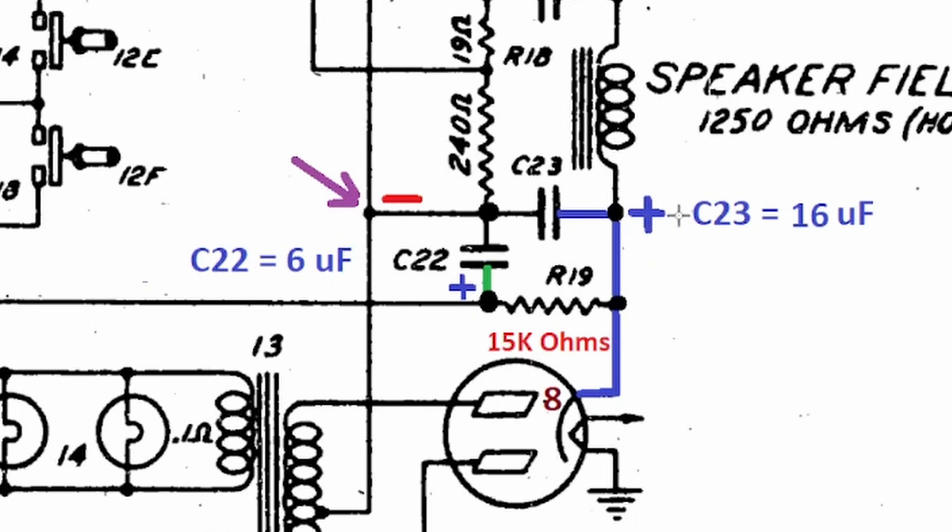The other side is going to be positive. There is a connection to R19 which is a resistor, and also is soldered to pin 8. So this is going to be 16 microfarad, the red wire that we discussed earlier. Of course, the other side, the orange, is going to be 6 microfarad.